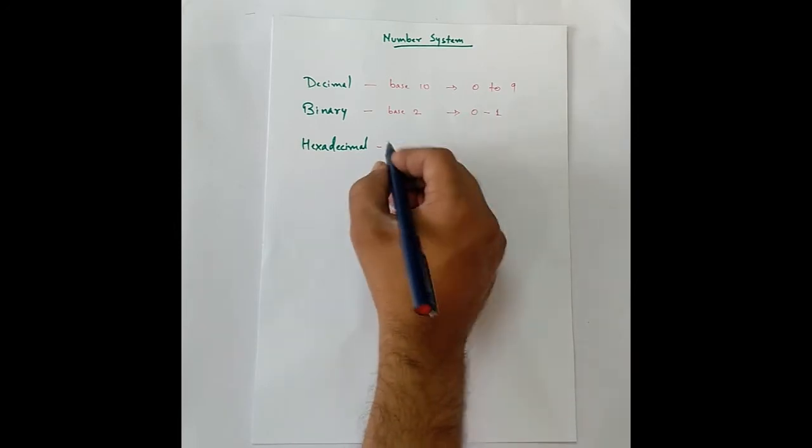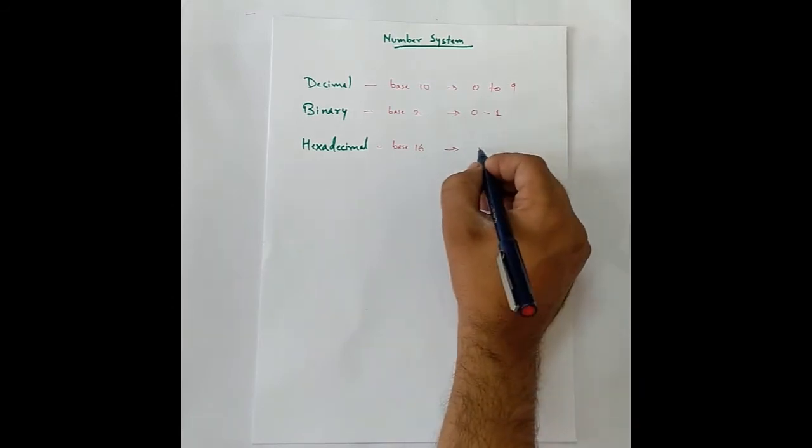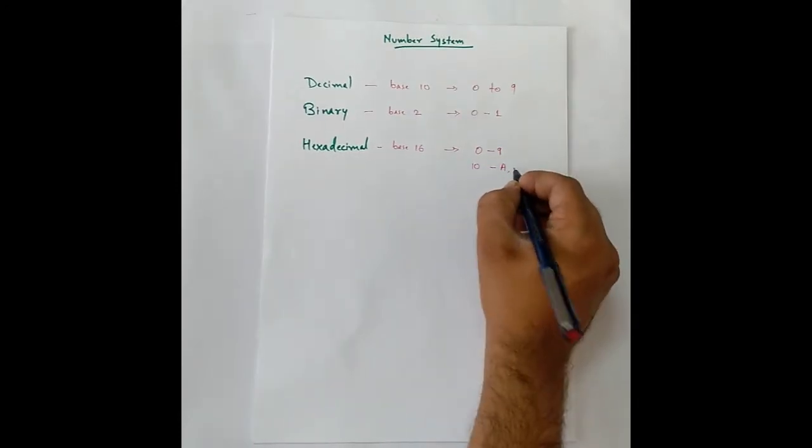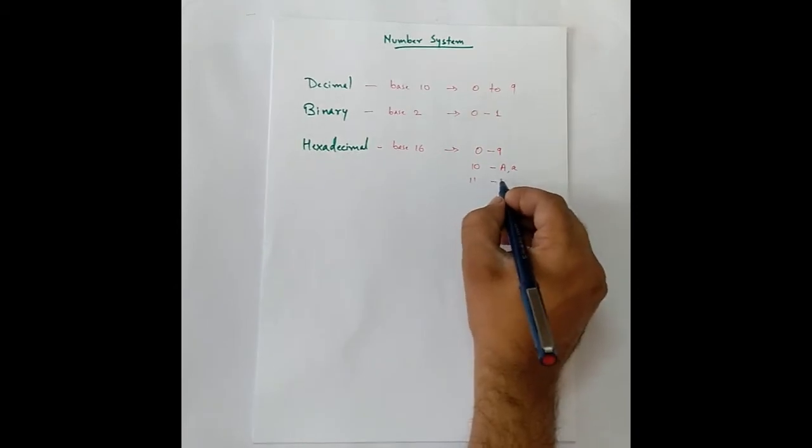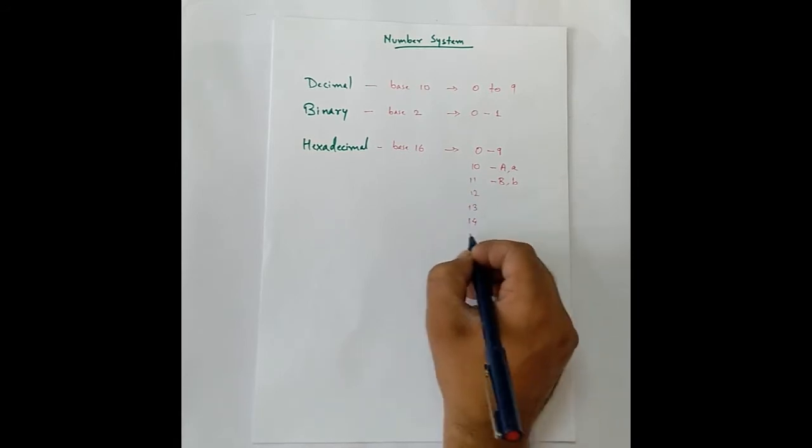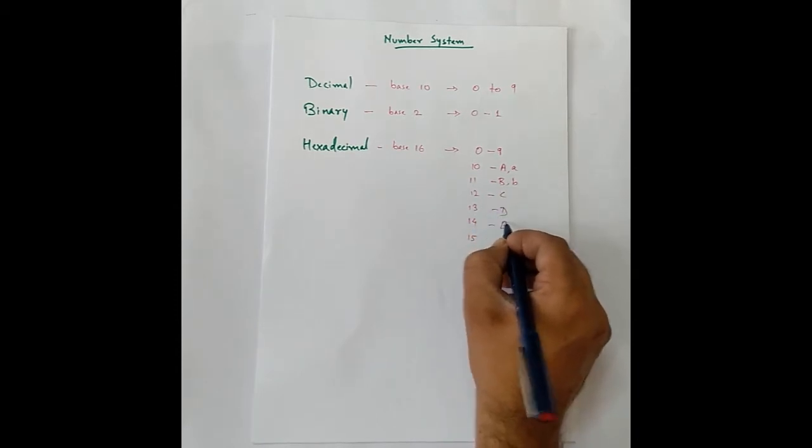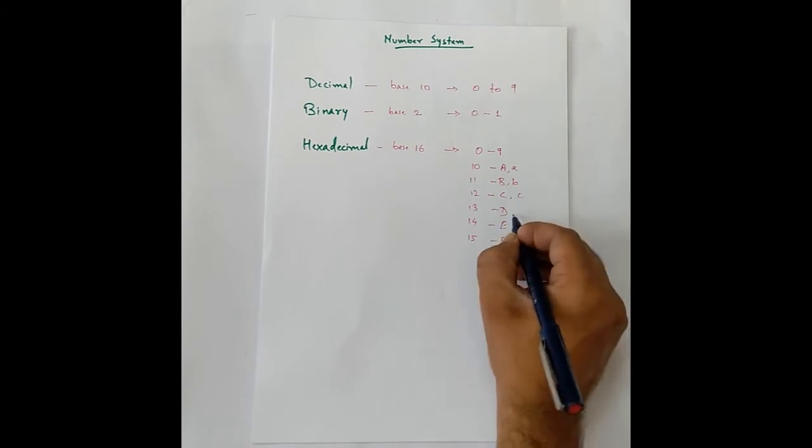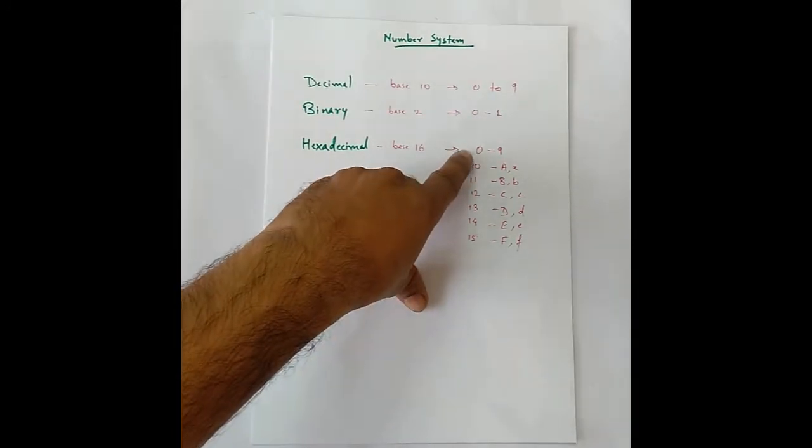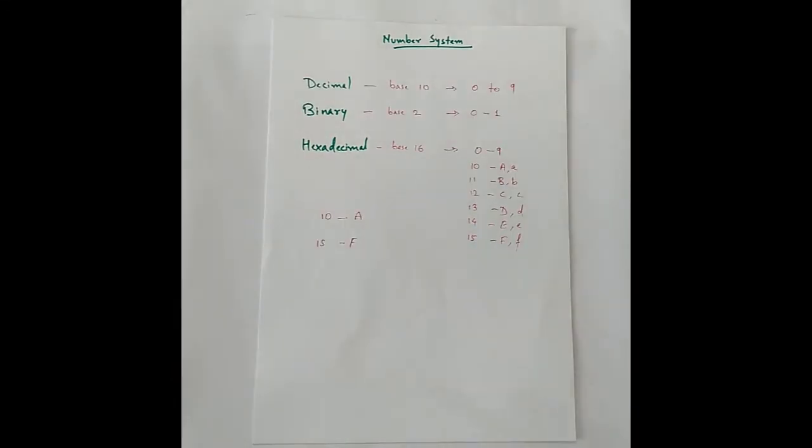Similarly for hexadecimal, we have a base of 16 and the digits are from 0 to 9, and then 10 becomes A, 11 becomes B. Similarly we have 12, 13, 14 and it can go only up to 15. So this becomes C, D, E, F. There are total 16 digits here, starting from 0, all the 0 to 9 and then up to 15. Let's see how we convert these numbers from one to another.